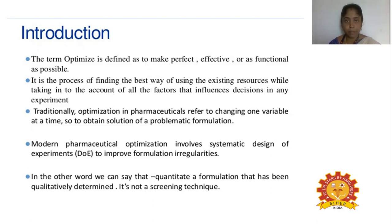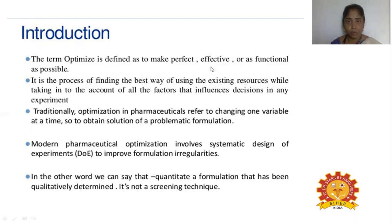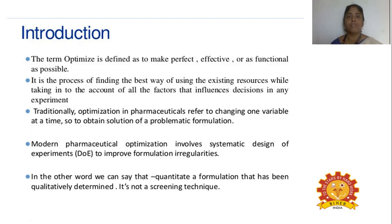In bioprocess industries, if you are producing vitamins, carbohydrates, or any form of sugar, that product has to be in a very perfect and effective manner to perform its functional role. Similarly, in petrochemical industries, whatever product is produced must be very effective. Even in a lab, any product must be very effective, efficient, and functional. So 'optimize' is defined as to make something perfect, effective, and functional as possible.